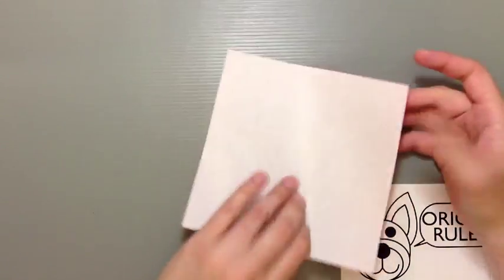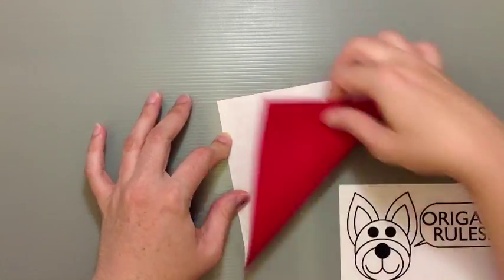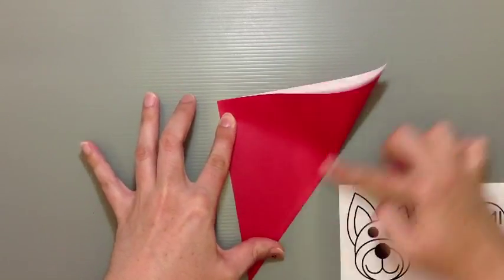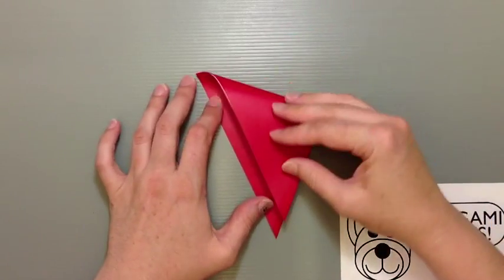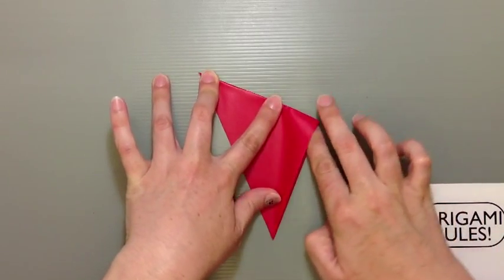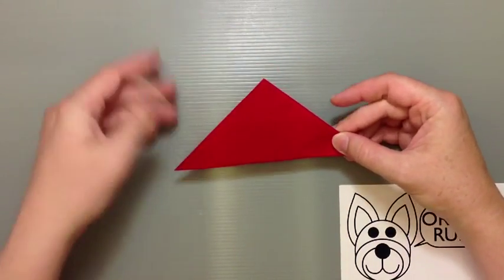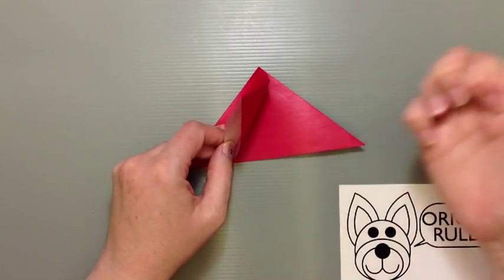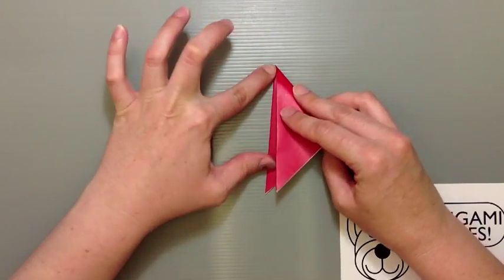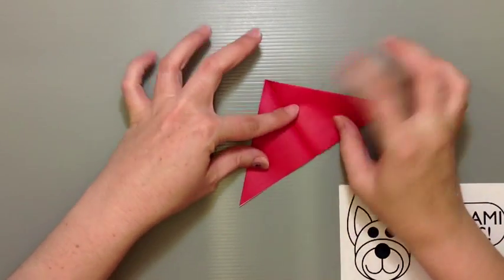So, what we're going to do is start off here with our color side facing down, and I'm just going to go ahead and first fold my paper in half diagonally into a big triangle. Then I'm going to go ahead and fold it into another triangle here, bringing my sides together. Make sure you get a good crease at the top.